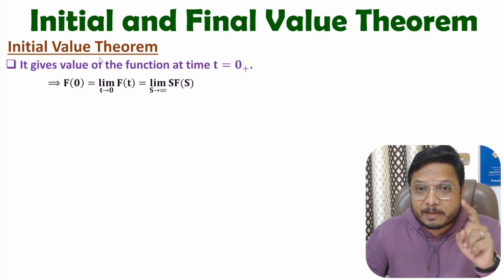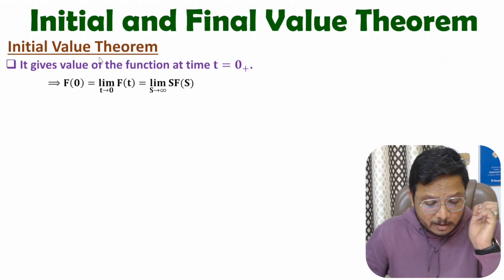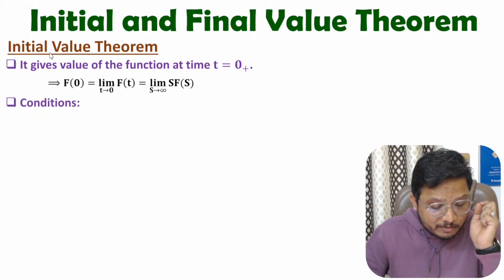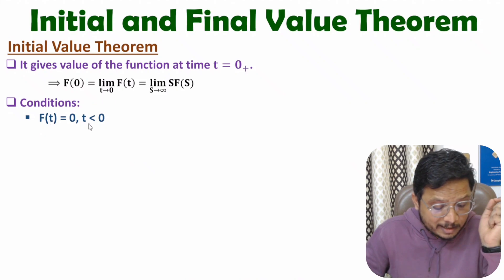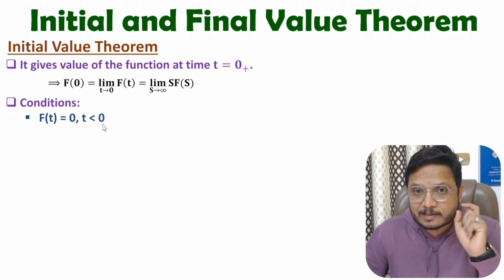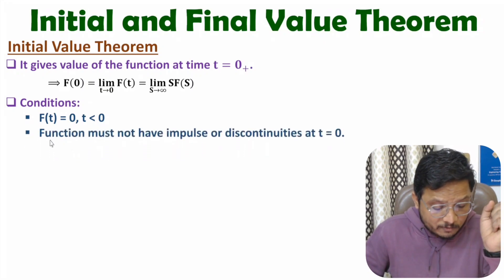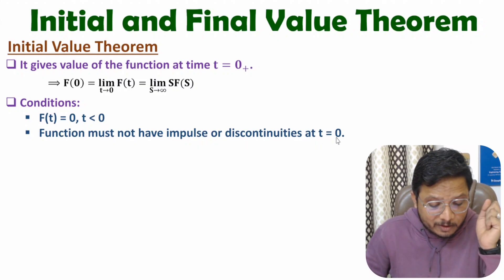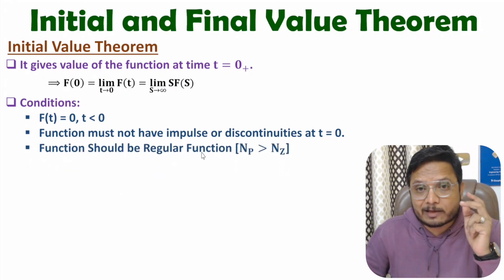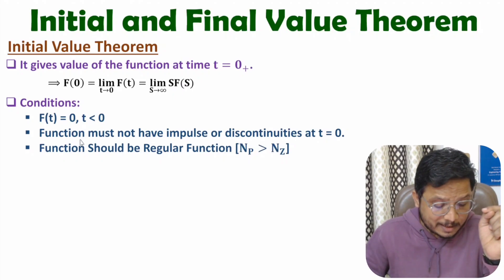The initial value theorem is applicable only if the following conditions are met. First condition: f(t) should be 0 for t less than 0. Second condition: the function must not have impulse or discontinuities at t equals 0 — if the function has impulse or discontinuities at t equals 0, we cannot identify the initial value. Third condition: the function should be a regular function, meaning there should be a larger number of poles compared to the number of zeros.